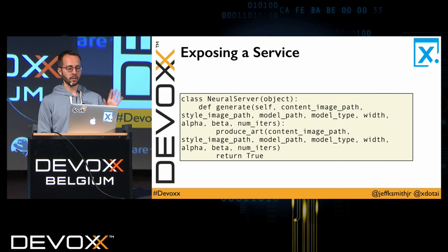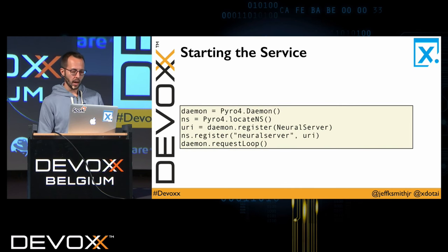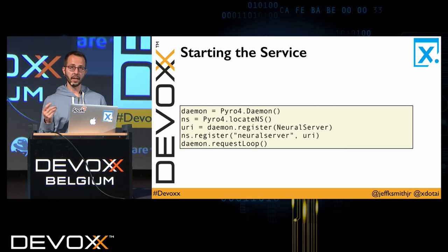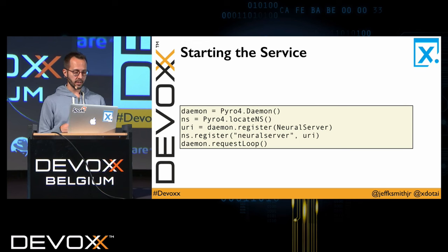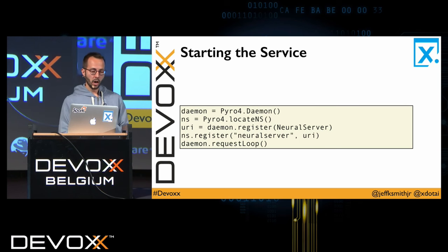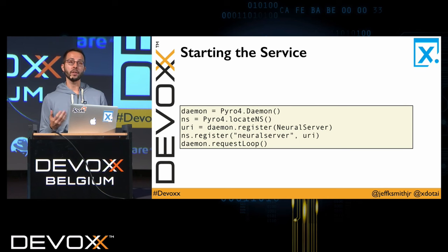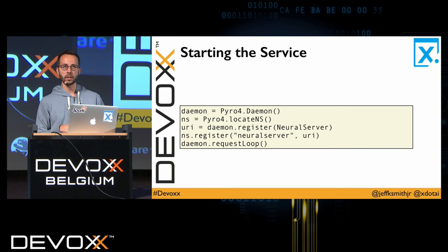To talk across the Python runtime back to the JVM, we're going to use a library called Pyro Light. This allows us to use a Java library and a Python library that know about each other and have common expectations for communication. We're instantiating a Pyro4 daemon, creating a name server, and registering this Python application as a service available for service discovery just by name — in this case we've defined our service as 'neural server'. This instantiates that object and makes it available to other Pyro services.